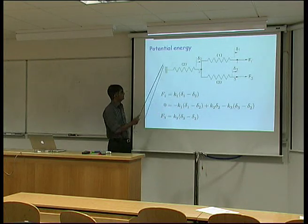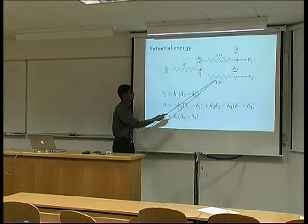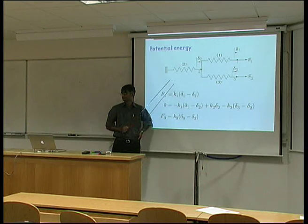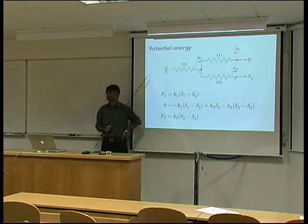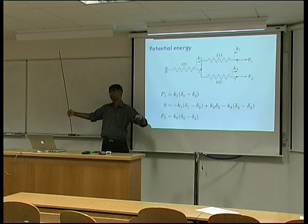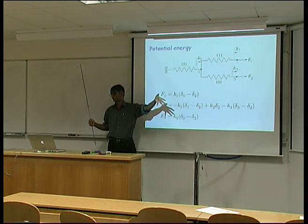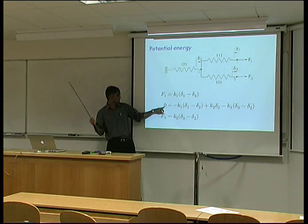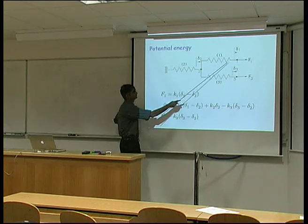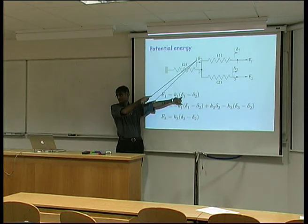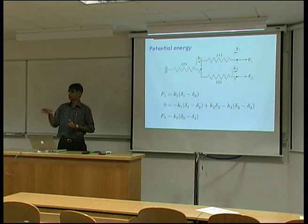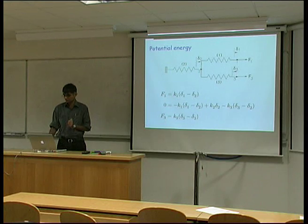Looking at this system: it is rigidly fixed on one side, with spring 2, spring 1, and spring 3. This is rigidly fixed and we are applying forces F1 and F3. There will be no net force at node 2. We originally fixed it there so there will be a reaction force exactly equal to F1 plus F3. F1 causes displacement delta 1, but we've also got delta 2, so the net is delta 1 minus delta 2, and similarly delta 3 minus delta 2. Now I'll use a potential energy approach to derive the stiffness matrix.